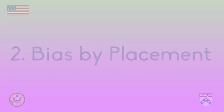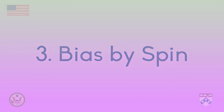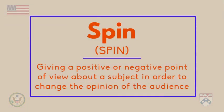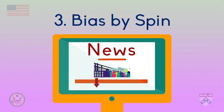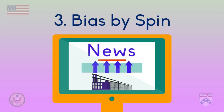The third type of bias we're going to introduce is bias by spin. When we talk about media, spin means giving a positive or negative point of view about a subject in order to change the opinion of the audience. Let's say that on Ronnie's site, the article about the closing factory makes it seem like this is a terrible situation — the words used and the information included all make it very clear that we should think it's a bad thing. However, on Adithi's website, the article about the closing factory has a much different feel; the words and information included all make it clear that the situation is good. Because both articles are talking about the same thing but trying to make the audience feel a different way about it, there is probably bias by spin.